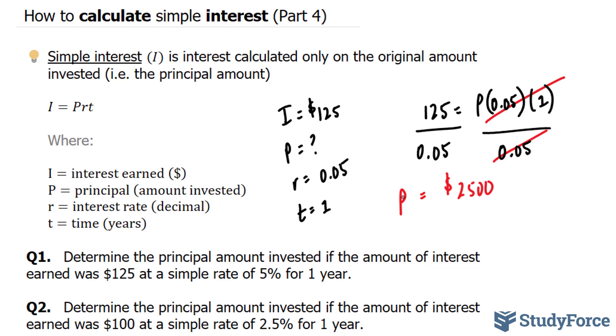Let's move on to question 2. In question 2, they want us to determine the principal amount invested if the amount of interest earned was $100 at a simple rate of 2.5% for one year.